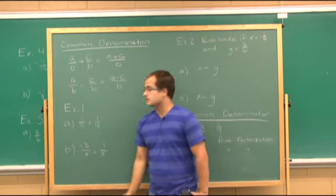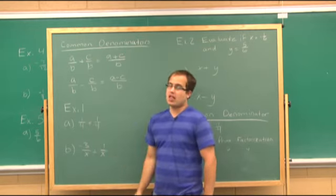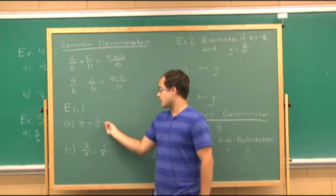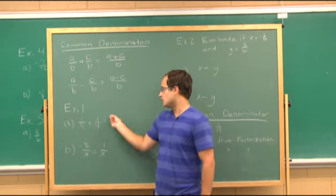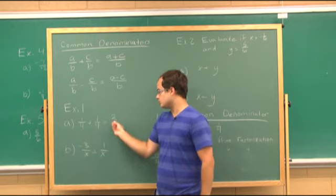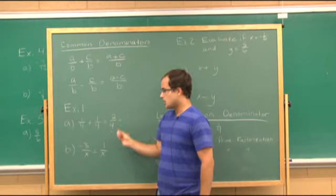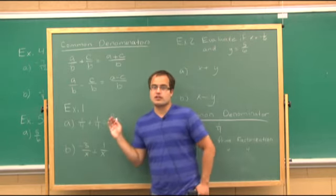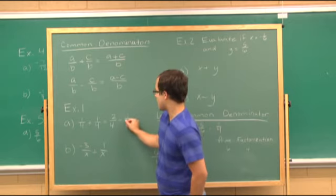Example one: add 1/4 plus 1/4. They have like denominators, so you just add the numerators. One plus one is two, and then the denominator stays the same. You should be familiar that 2/4 reduces to 1/2.